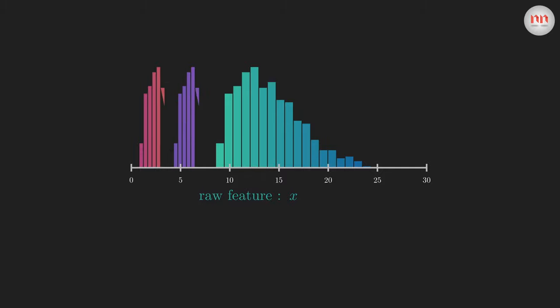For example, if we subtract by the lowest value of x, and divide it by the difference between the max and min values of x, then we call it min-max normalization. Let's see how it changes the data.